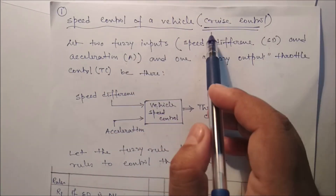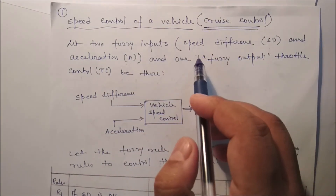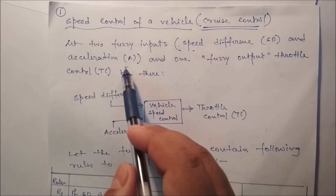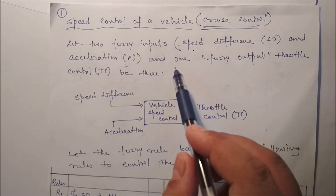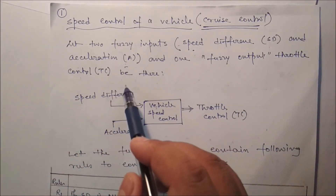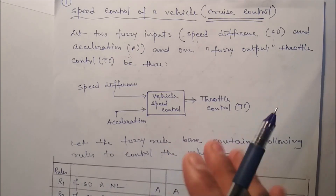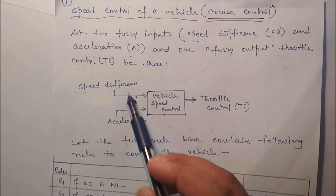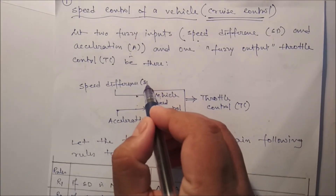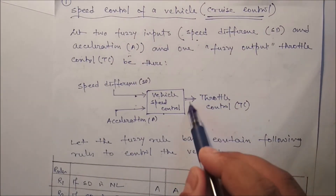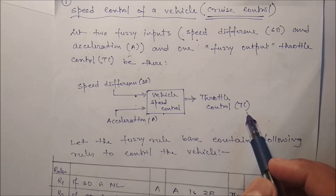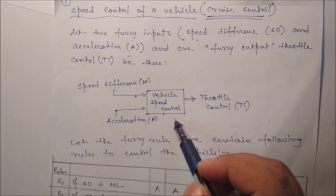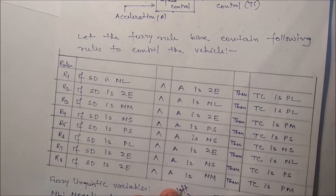This topic covers speed control of a vehicle, or cruise control, using fuzzy logic. Two fuzzy inputs are defined: speed difference and acceleration. One fuzzy output, throttle control (TC), is produced. This diagram shows our vehicle speed control system where the two inputs — speed difference and acceleration — feed into a single output, throttle control.